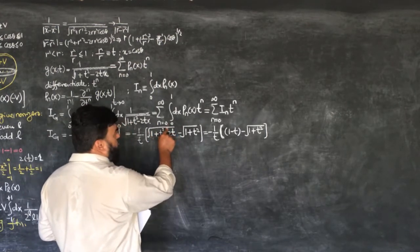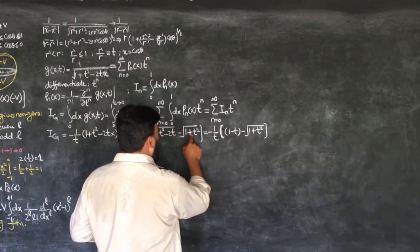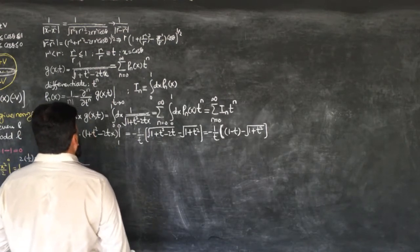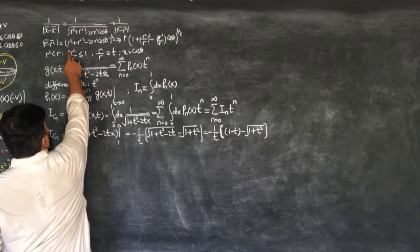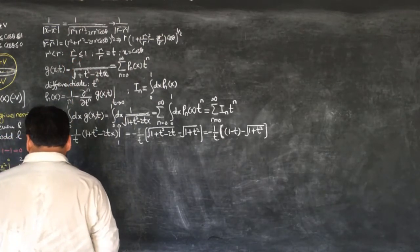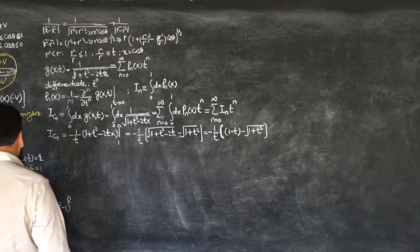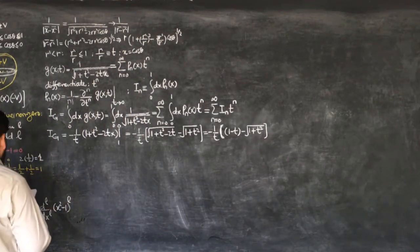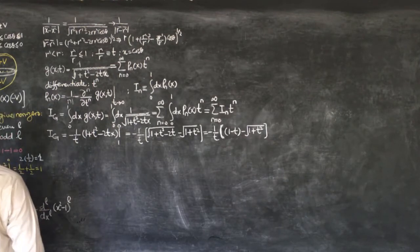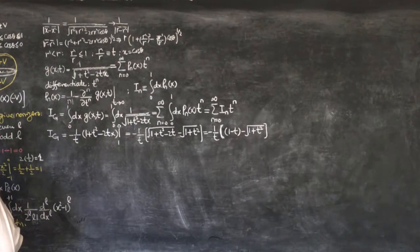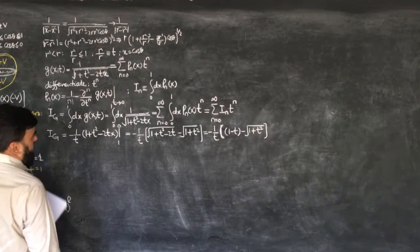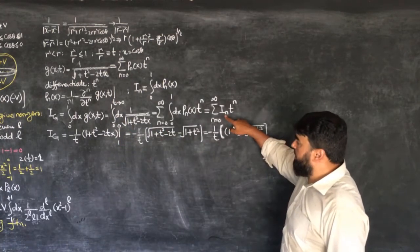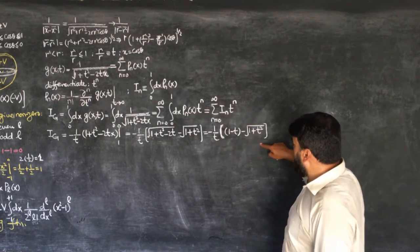This simplifies to minus 1 over t times (1 minus t) minus the square root of 1 plus t squared. The square root cancels appropriately, giving (1 minus t), since t is less than or equal to 1. Now if we expand I_G in terms of a power series in t, then the coefficients of t^n are actually the desired I_n values.